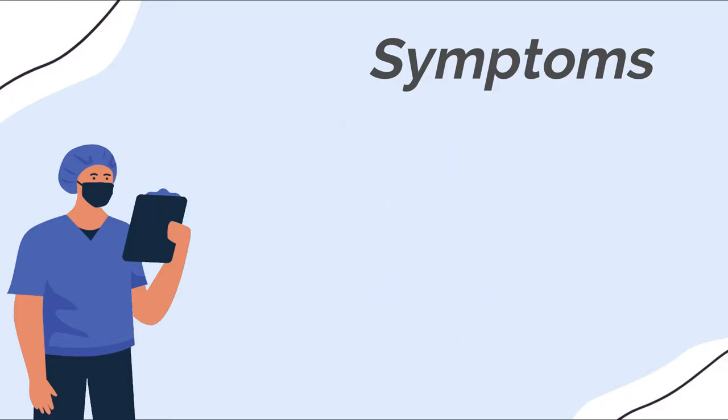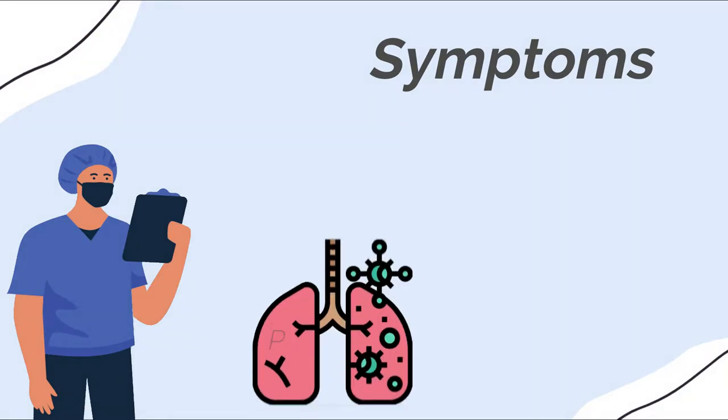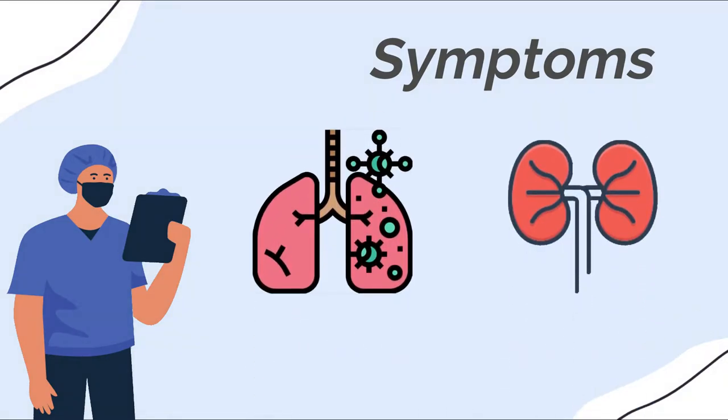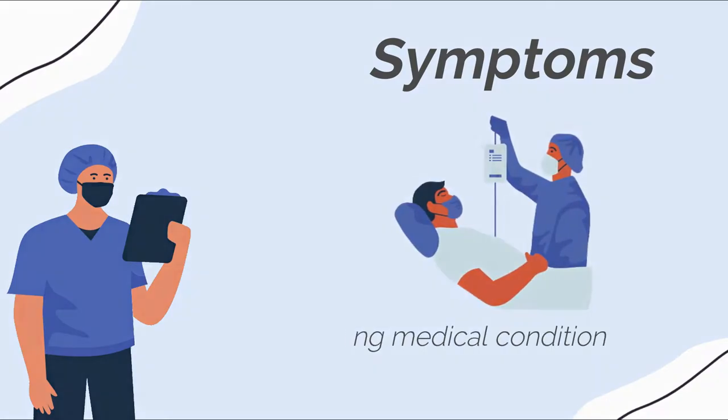For many people with MERS, more severe complications followed such as pneumonia and kidney failure. Most of the people who died had a pre-existing medical condition that weakened the immune system.